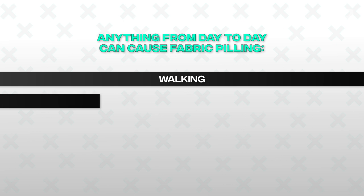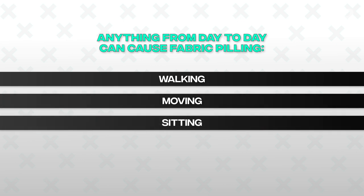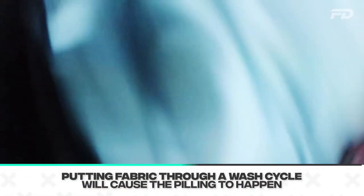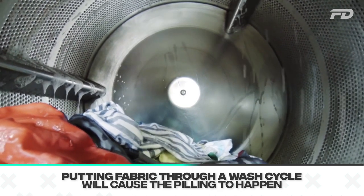Pretty much anything from day to day can actually cause pilling. Normal movements like walking, moving, sitting, and stretching create friction on the surface of the fabric that can cause these lint balls to form. It also depends on what fibers construct that garment. More extreme or agitated movements — like putting a fabric through a wash cycle — accelerate the process of pilling. The agitation, the tumble effect, and fabrics rubbing against each other can create a larger issue than normal day-to-day movements.